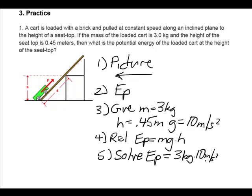So we have a weight of 30 newtons times our height, 0.45 meters. Let's multiply that.